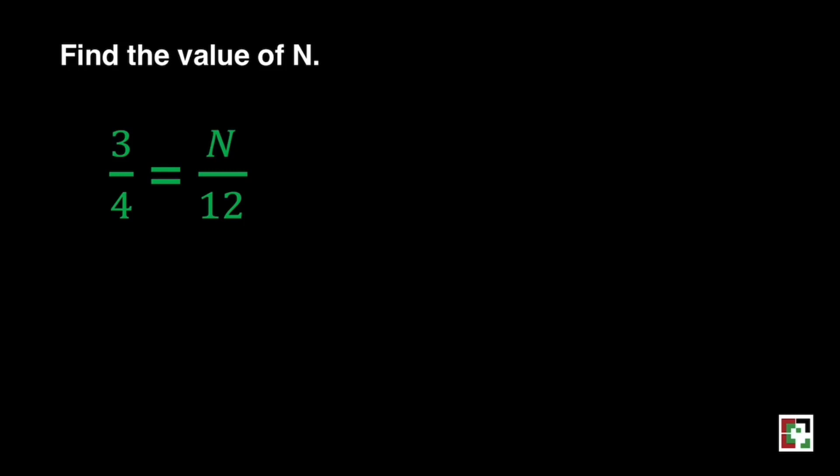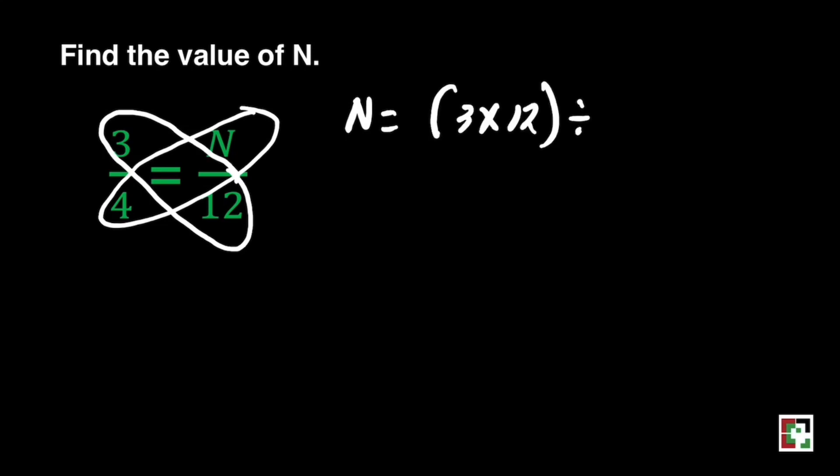To get the value of n, just do cross multiplication. That will be 3 times 12 divided by 4. 3 times 12 is equal to 36 divided by 4 is equal to 9. Our answer is 9.